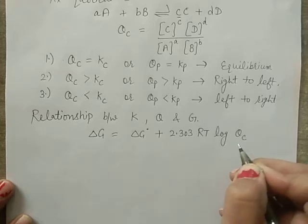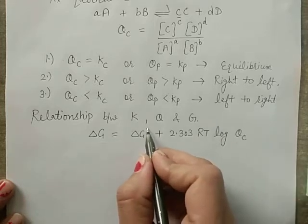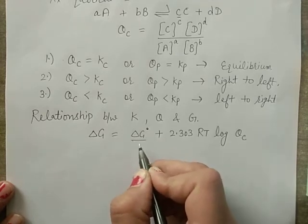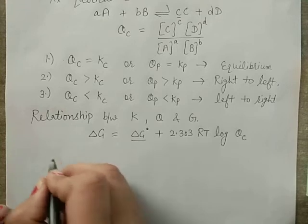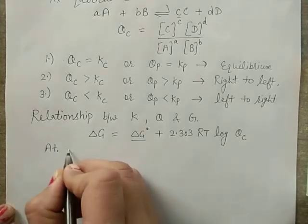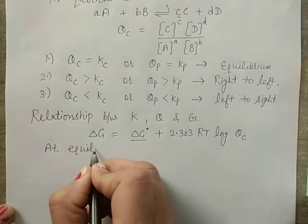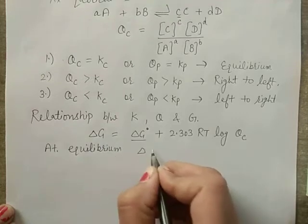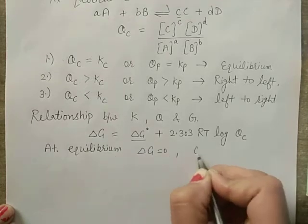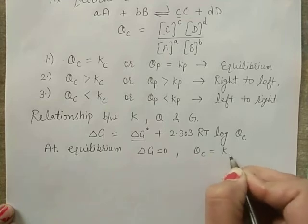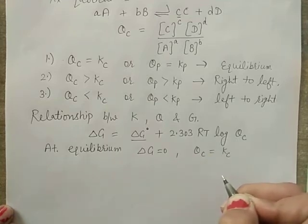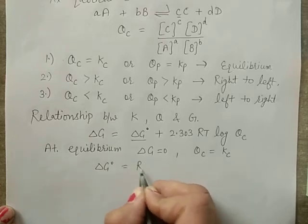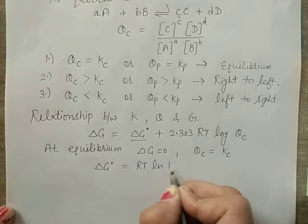At equilibrium, when ΔG = 0 and Q = Kc, we get: ΔG° = −RT ln Kp.